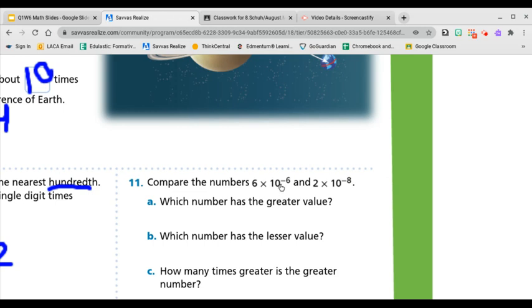So which is bigger? Negative 6, bigger in value, or negative 8. So think about your integer rules. Which one of these has a greater value? Negative 6 does, because it's closer to the positive. So that means that 6 times 10 to the negative 6 has the greater value.